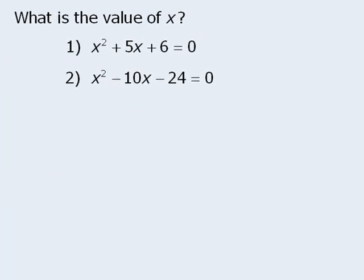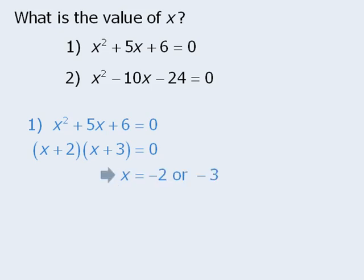Here we want to find the value of x. Statement 1 provides us with a quadratic equation involving x. To solve this equation, we will first factor the left-hand side. From here we can see that if x plus 2 times x plus 3 is equal to 0, then x must equal negative 2 or negative 3.